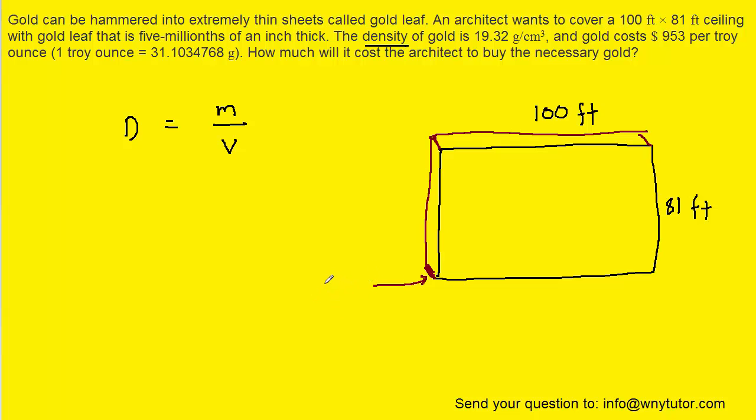5 millionths can be written as 5 divided by a million. A million can be written as a 1 with 6 zeros, or we could write it as 10 to the power of 6. So that would be 5 millionths of an inch. We'll notice that these units for the measurement of this box are inconsistent. We have inches here, and then feet and feet. So we need to get those into consistent units.